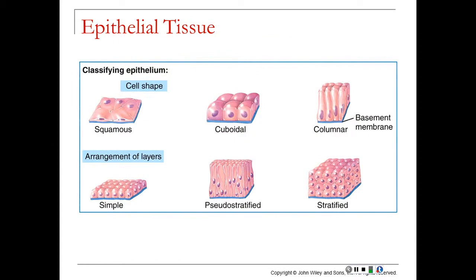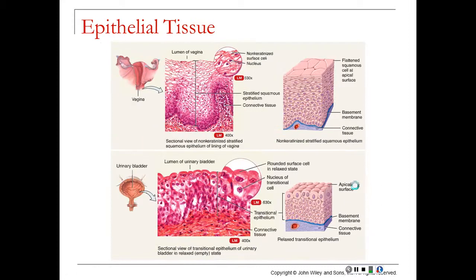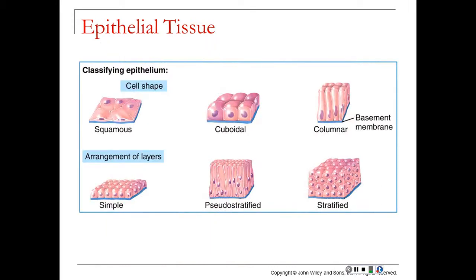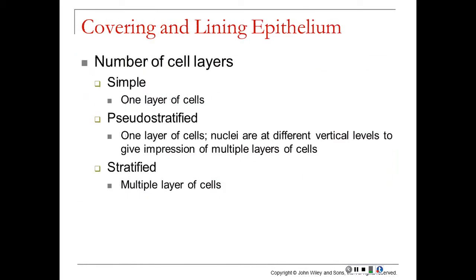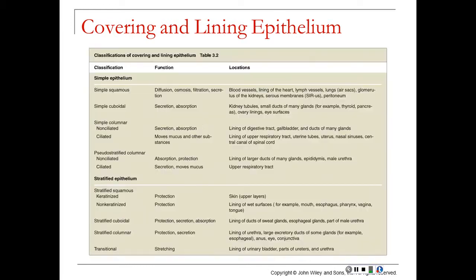Here's another depiction of how epithelium is classified by cell shape — squamous, cuboidal, and columnar — and by number of layers: simple, pseudo-stratified, or stratified. All are attached to that basement membrane. You should know at least one example for each tissue type and be able to relate function to structure. For example, simple squamous epithelium, being one layer thick, is good for diffusion and filtration, while cuboidal is better for absorption. The structure-function relationship is central to anatomy and physiology.